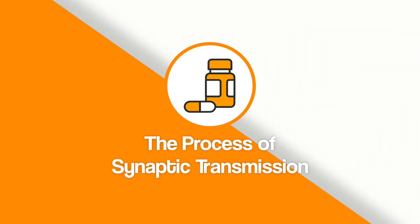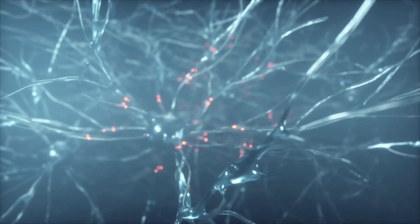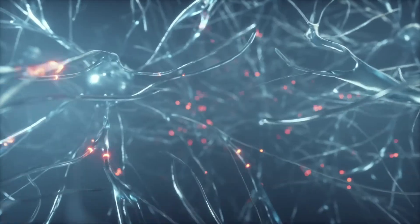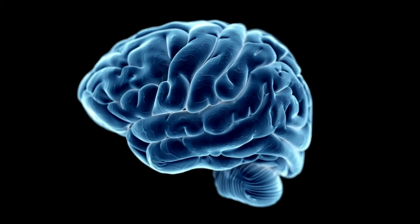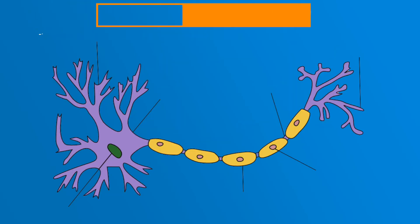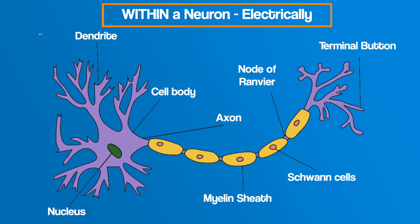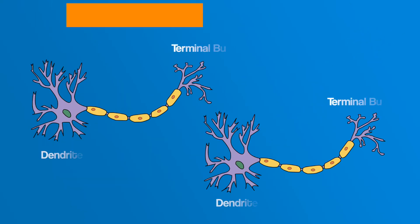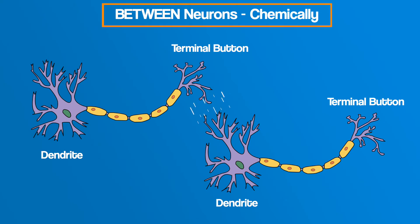To understand how these drugs work we need to briefly go over how synaptic transmission works. Once we've done that we will then be able to see how the drugs affect that process. Your nervous system is thought to contain somewhere around 100 billion neurons, with your brain containing approximately 80% of them. These nerve cells transmit signals electrically and chemically. Within a neuron, signals are transmitted electrically, where the electric signal starts at the dendrites and passes along the axon to the terminal buttons. But between neurons, signals are transmitted chemically — this process is called synaptic transmission.